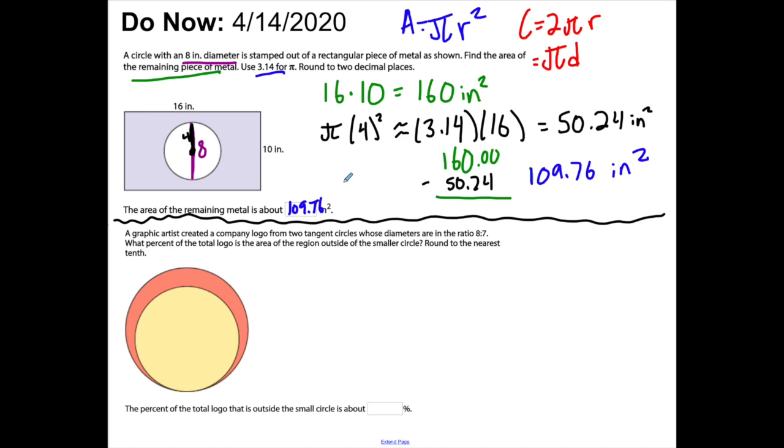Going to the second one, this one's a little bit tricky. The word tangent just means they're going to touch in this one point. That's important because if they didn't, it would be trickier to find the area. This is essentially the exact same problem I just did above, except instead of taking a square area and subtracting a circle area, I'm taking a circle area and subtracting a circle area. I know the diameters are in a ratio of 8 to 7.